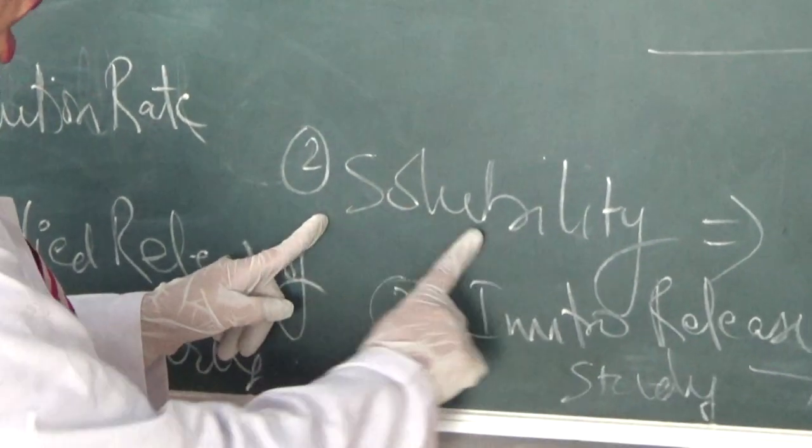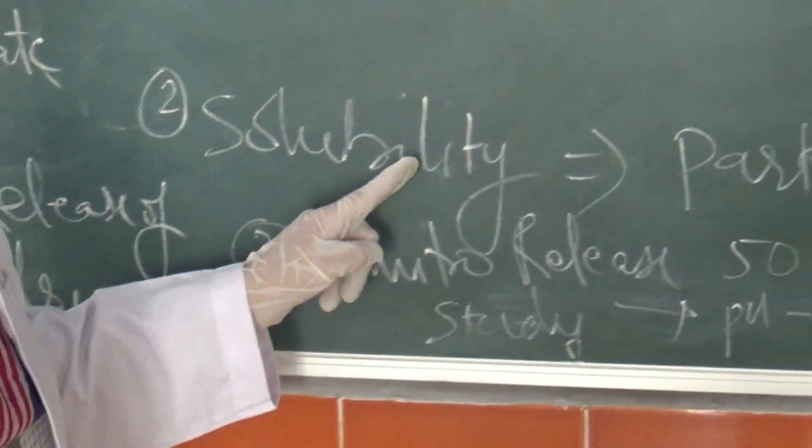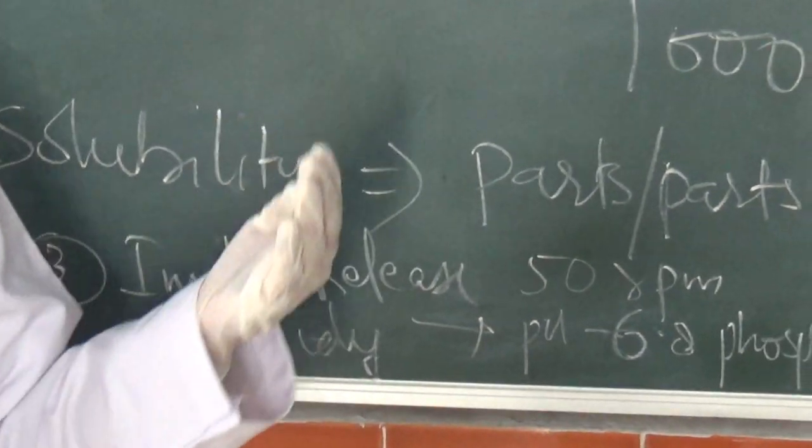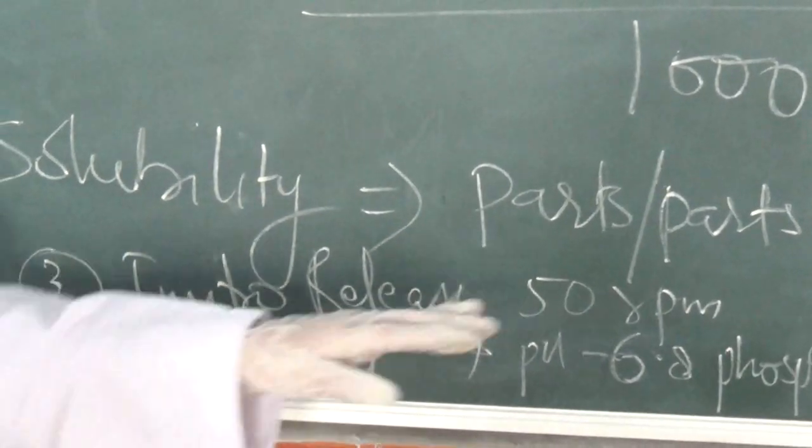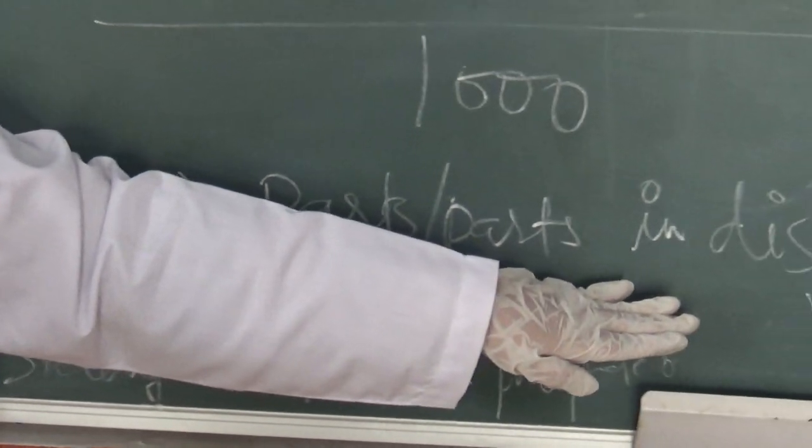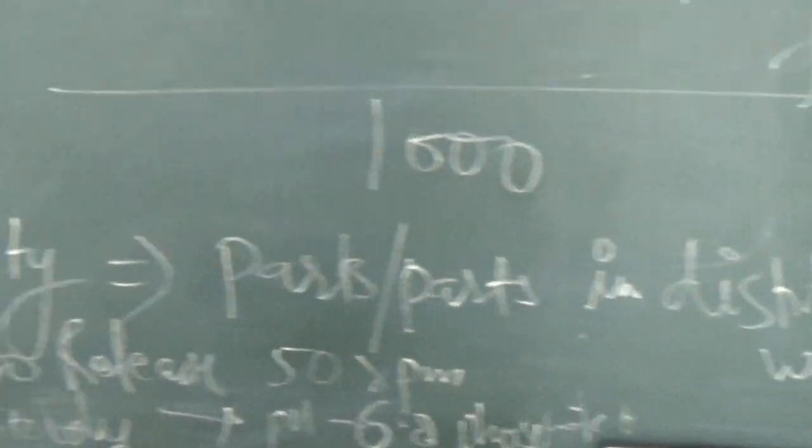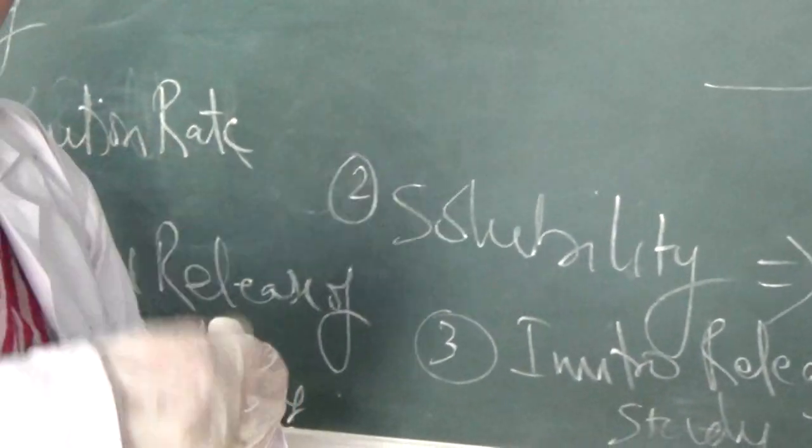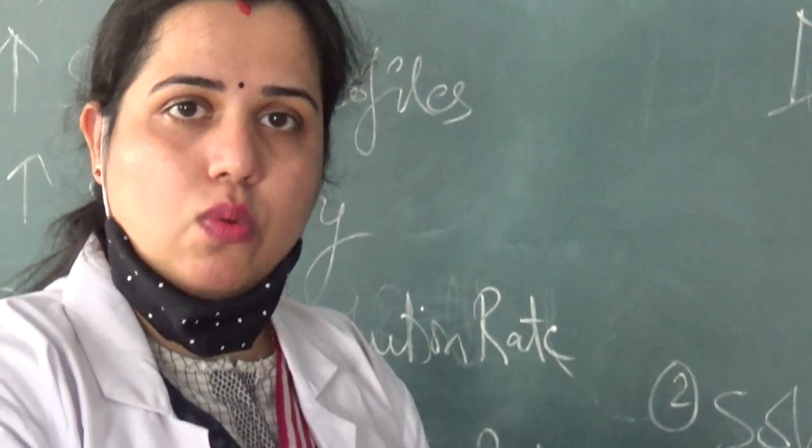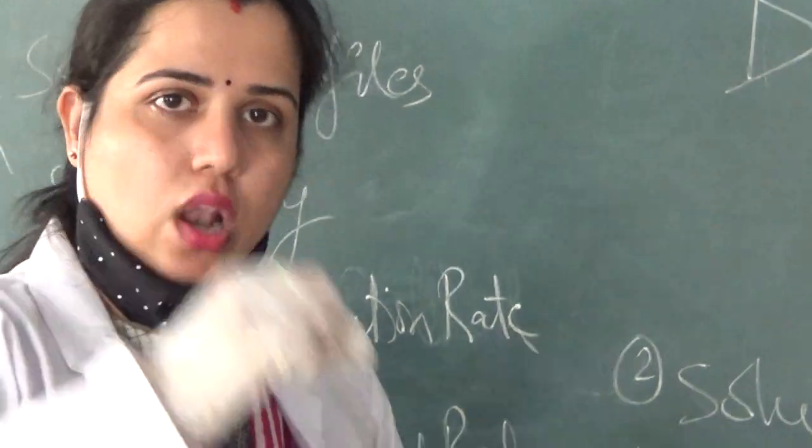Our next parameter is solubility. Solubility, as you all know, is determined parts by parts as per BP, USP and IP. Here we take distilled water for measuring solubility and we keep on adding solid dispersion in 10 ml of distilled water until it gives you saturated solution.